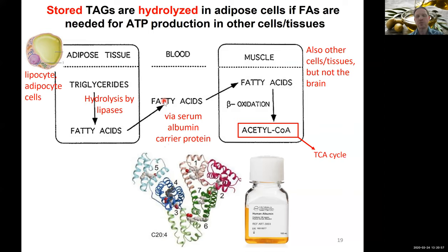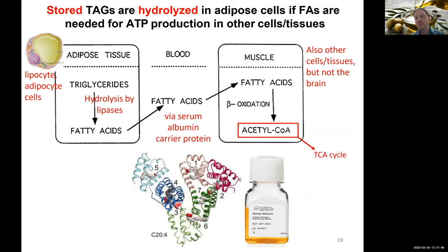You really don't want free fatty acids to accumulate — they're acidic and can be reactive. So to make them more inert and transport them safely through the bloodstream, we bind the free fatty acids to a protein called serum albumin, which acts as a carrier protein. You can see its three-dimensional structure here with a number of fatty acids bound inside, allowing safe transport to a destination cell for further breakdown.